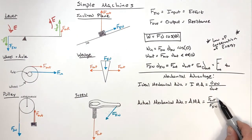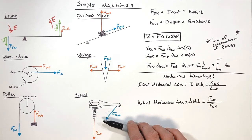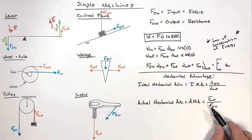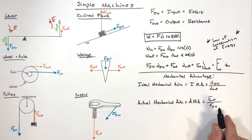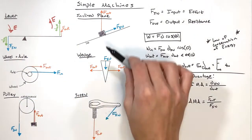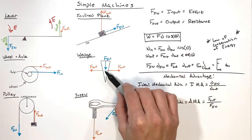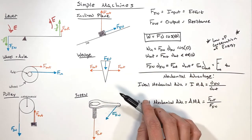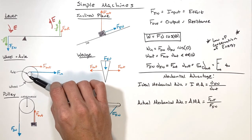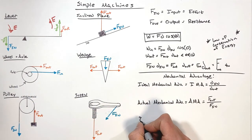Actual mechanical advantage is based on how much force we get out of a simple machine compared to how much we put in. In a perfect world, IMA and AMA would be the same, but they are not. The reason they differ is because of friction. Simple machines aren't always frictionless — pushing a block up an inclined plane has friction, a wedge splitting wood has friction, a screw has quite a bit of friction, while a wheel and axle has very little friction, making it very efficient.